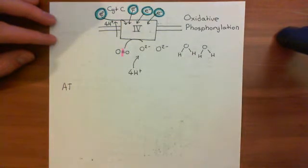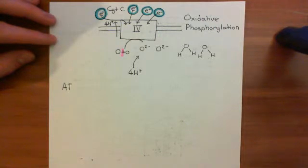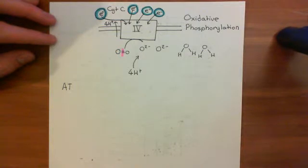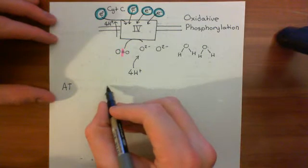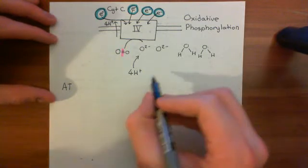This builds up a significant proton concentration gradient across the inner membrane of the mitochondria, where you have a much higher proton concentration in the intermembrane space than you do within the matrix. Let's draw a little picture of this.